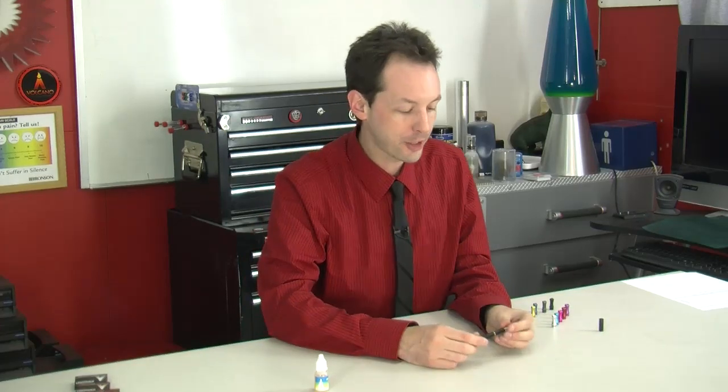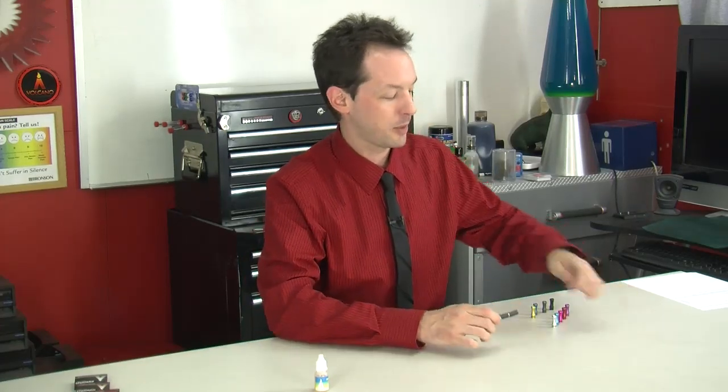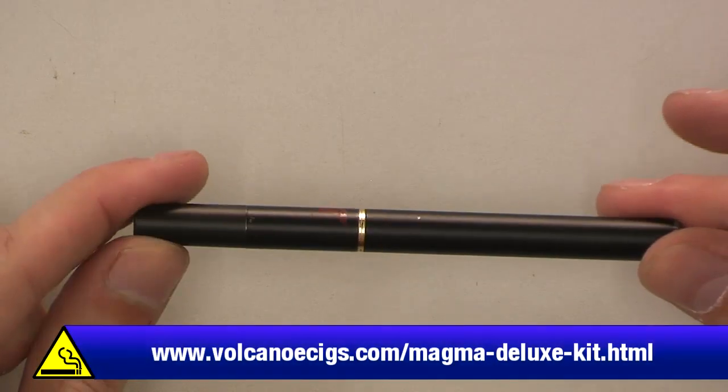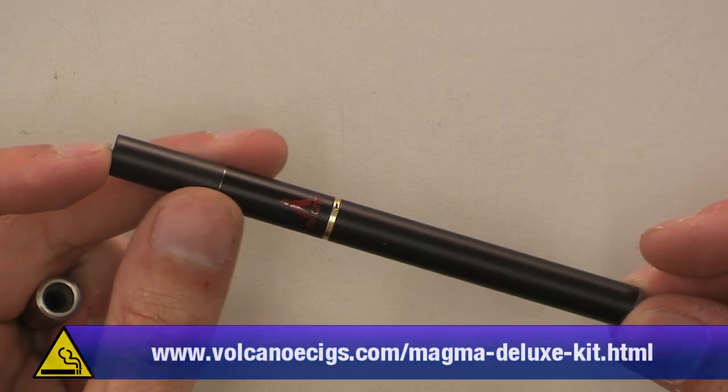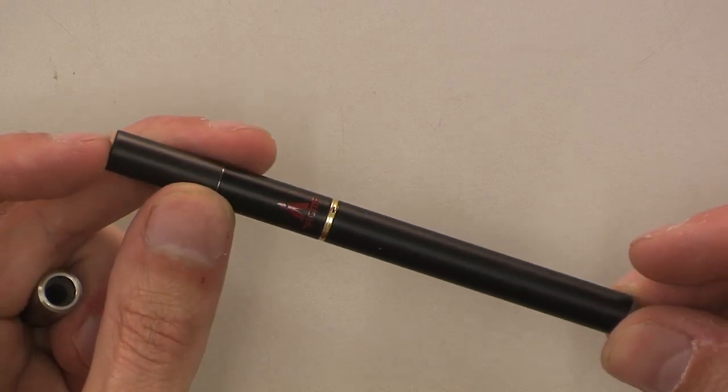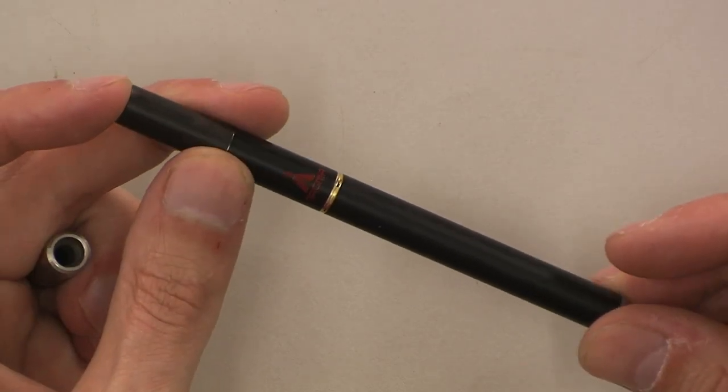Now we're going to take a look at the Magma here. That's the Magma. It is a three piece e-cig from Volcano. It is their big dog cigarette, the larger of the two. There's the Volcano and the Magma and there's a third coming out but we can't talk about that one yet. It's a secret. But this is the big one, the Magma.